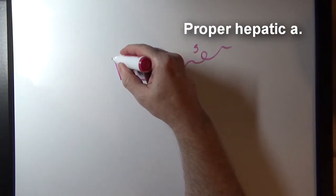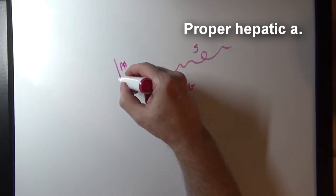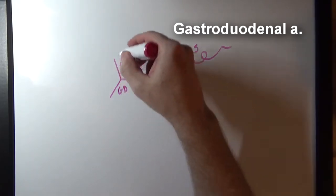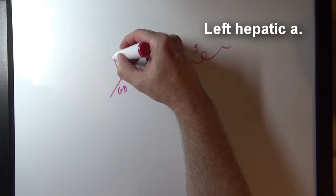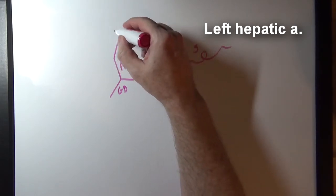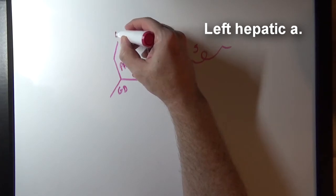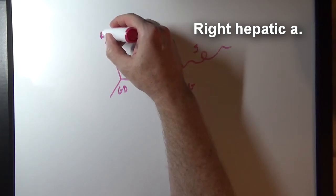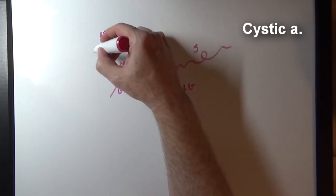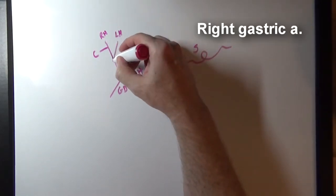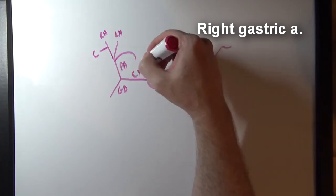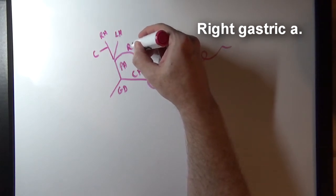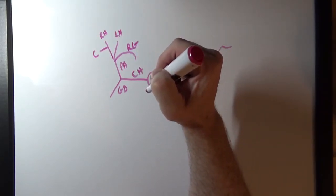The common hepatic artery branches into the proper hepatic artery and the gastroduodenal artery. The proper hepatic artery gives rise to the left hepatic artery and the right hepatic artery. Branching off the right hepatic artery is the cystic artery, which goes to the gallbladder. We also have the right gastric artery, which loops around and anastomoses with the left gastric artery in the lesser curvature of the stomach.